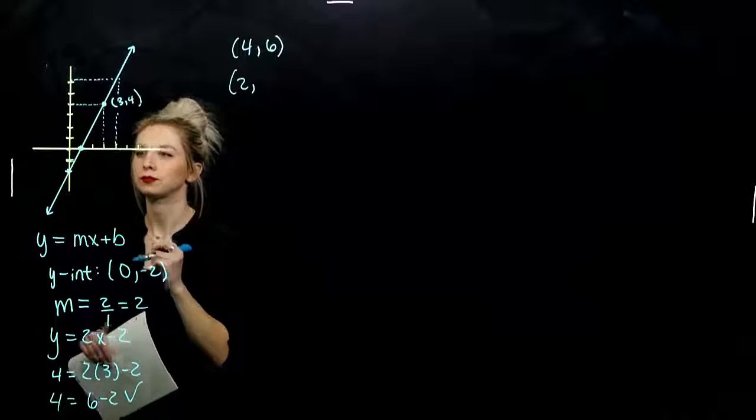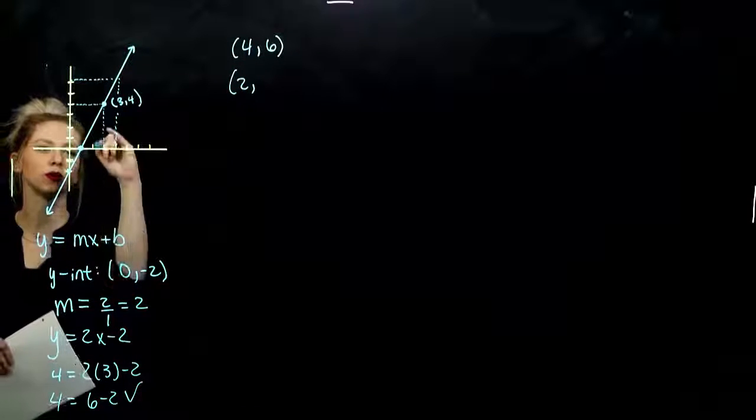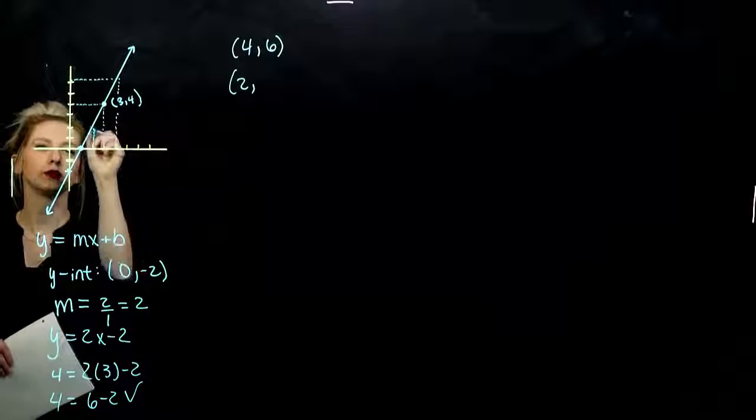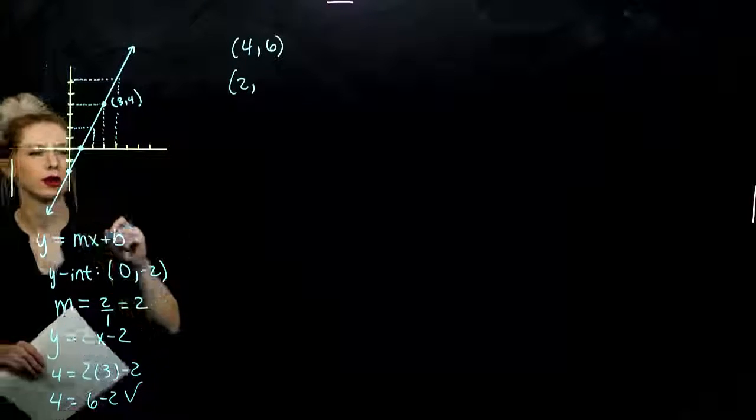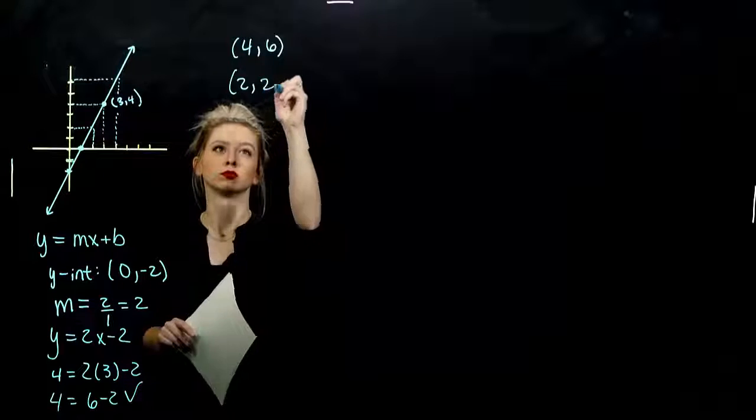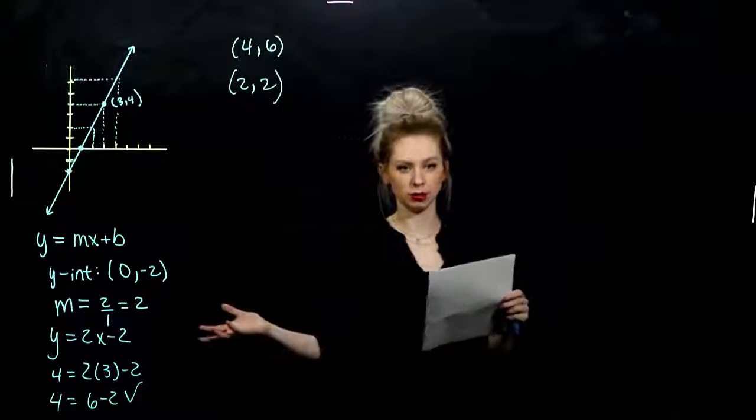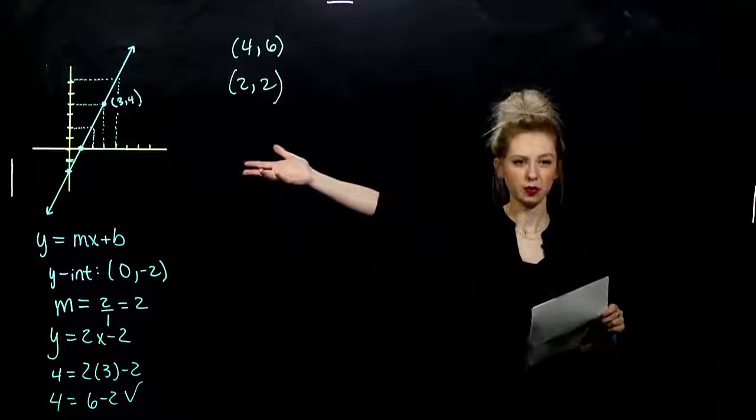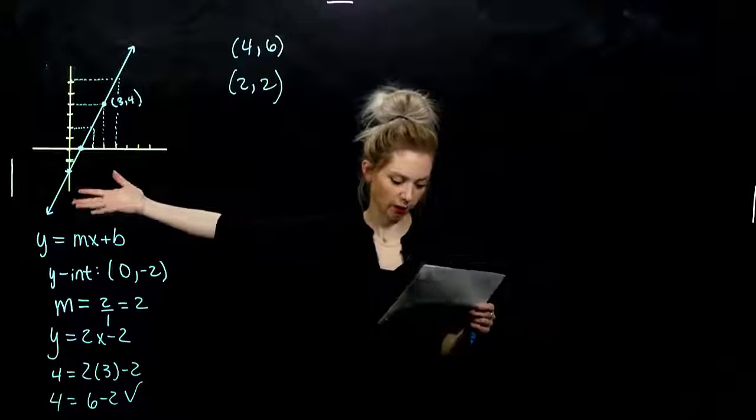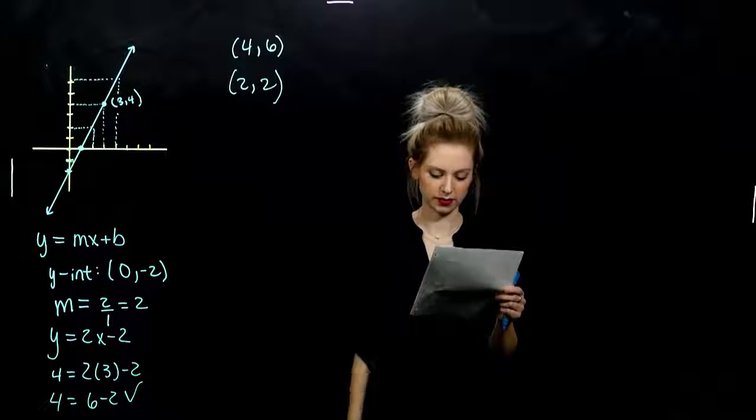And for 2, when we plug in 2 into our polynomial equation, what do we get out for y? 2. And again, we can plug those in and double check. But we can look off the picture, if we have nice grids, that's helpful, and tell the values of that polynomial.